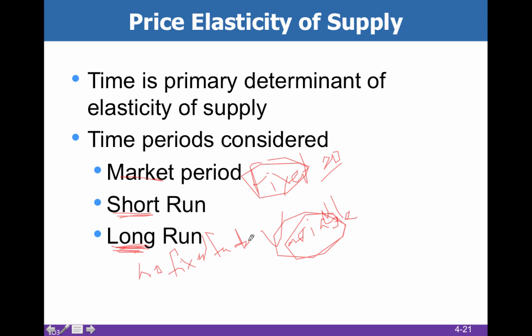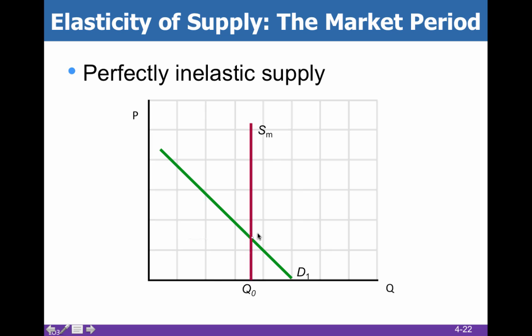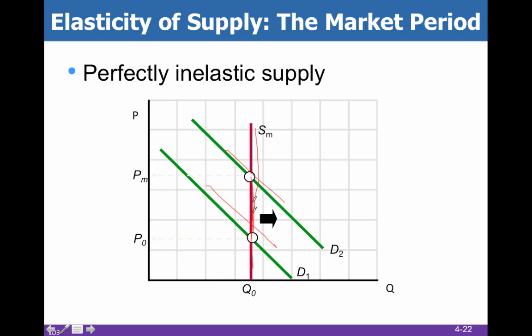In the market period, we have what we call perfectly inelastic supply, which looks like a vertical supply line. If demand changes from D1 to D2, suppliers can't change anything — in the market period, everything is fixed and nothing is variable. When the price of a good changes based on a shift in demand, so our P goes from P0 to PM, there's nothing the farmer can do about it. He's already planted, already watered, maybe already harvested. The price shifts and he is purely a victim of that change in the market. There's no time to react in the market period.